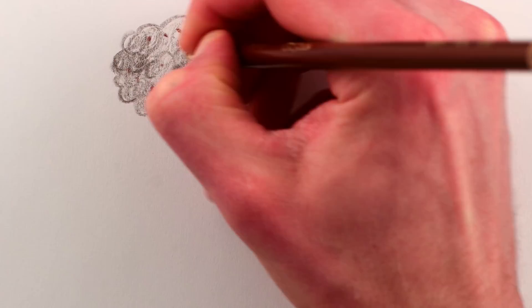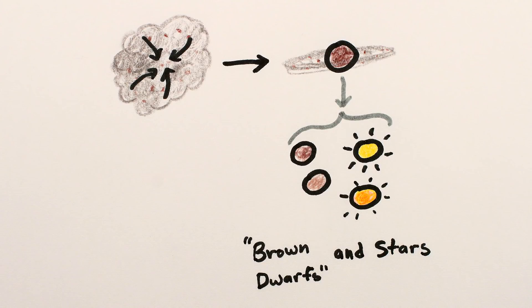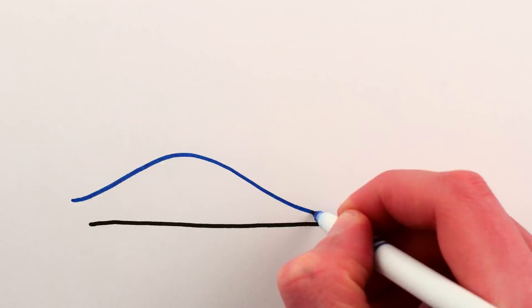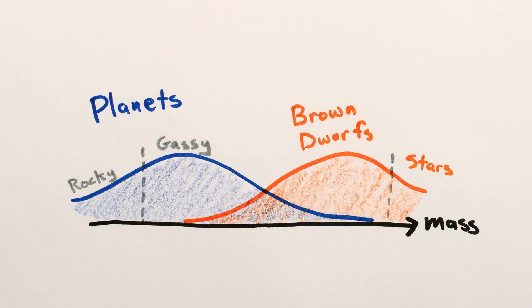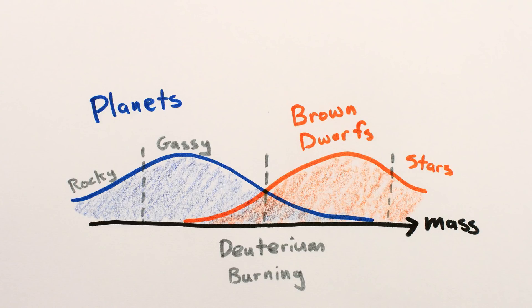Basically, a lot of evidence points to two separate populations of objects, things that form from gravitationally collapsing clouds of gas, and things that form from the leftovers. It appears an unfortunate coincidence that the overlap in these two populations is roughly at the mass where deuterium burning becomes possible.